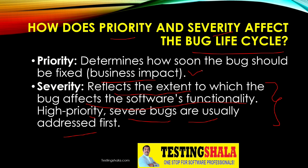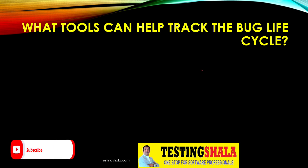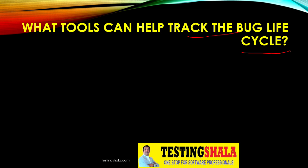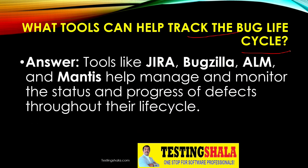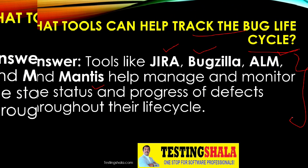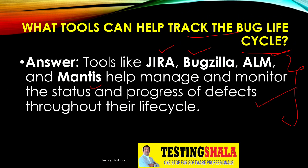What tools can help track the bug life cycle? There are certain tools like Jira, Bugzilla, ALM, and Mantis. These tools are used to manage defects or bugs and to monitor the status and progress of defects throughout the bug life cycle.